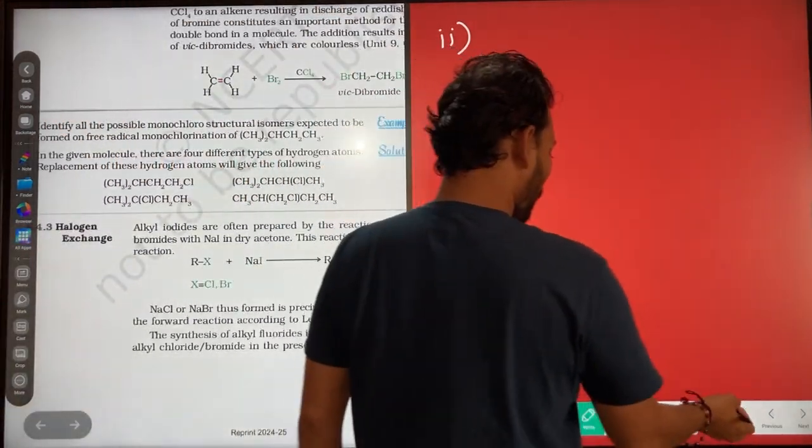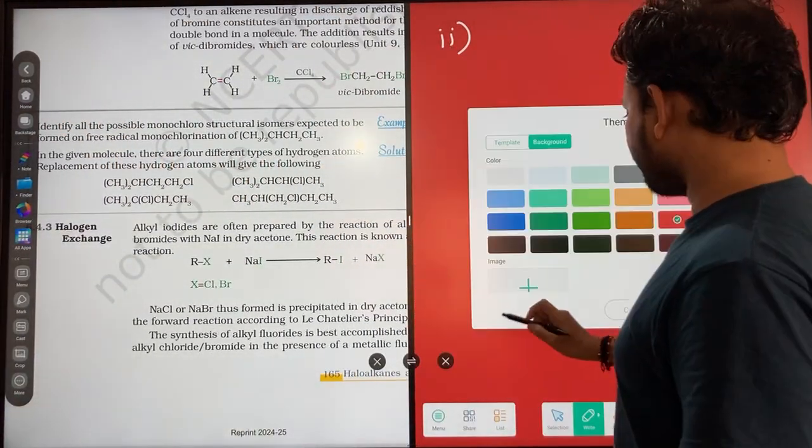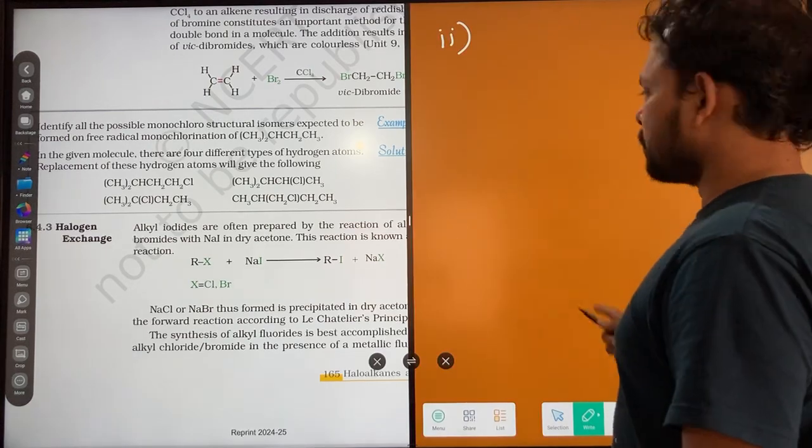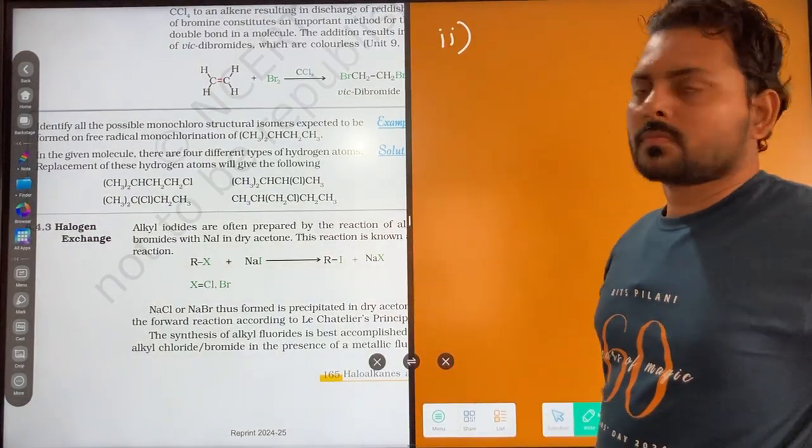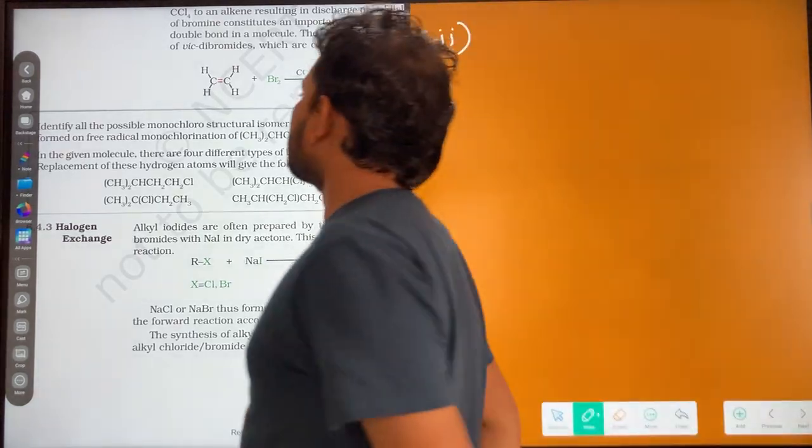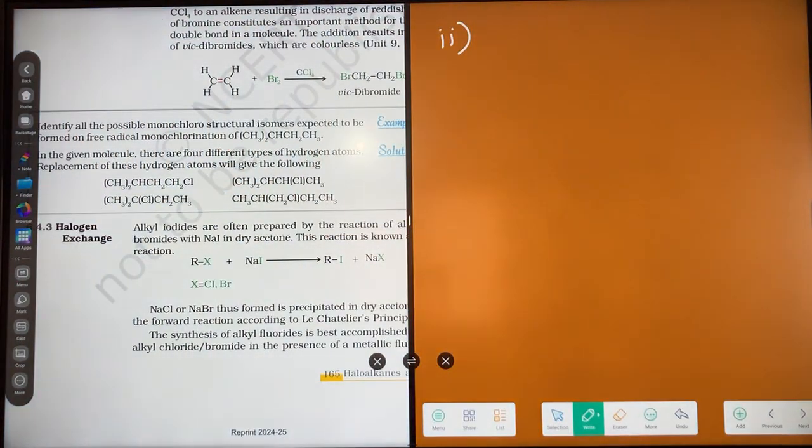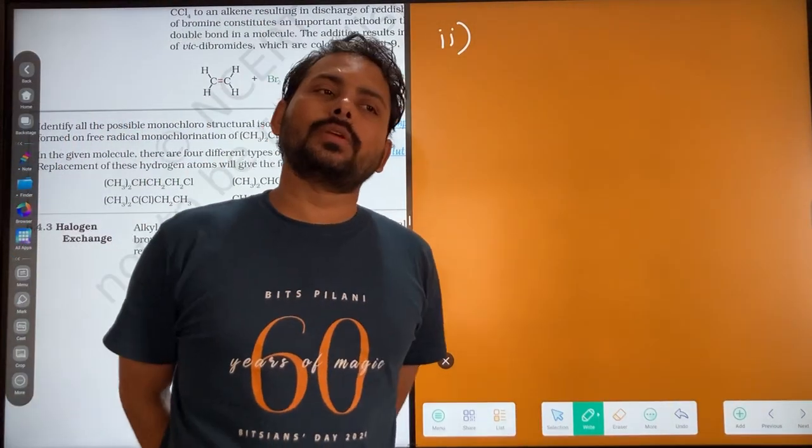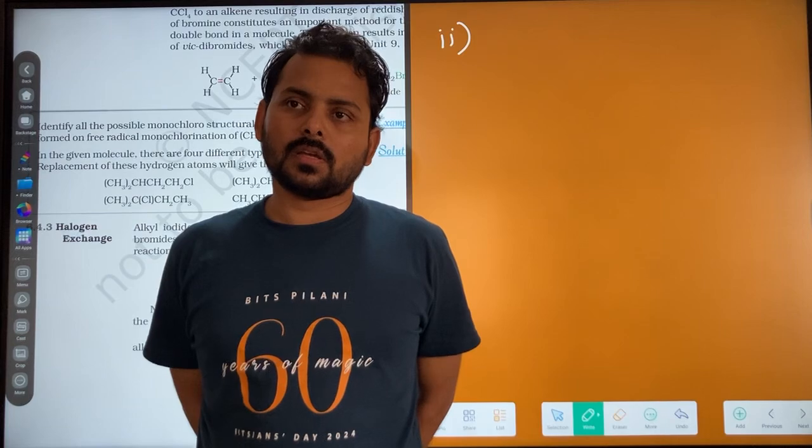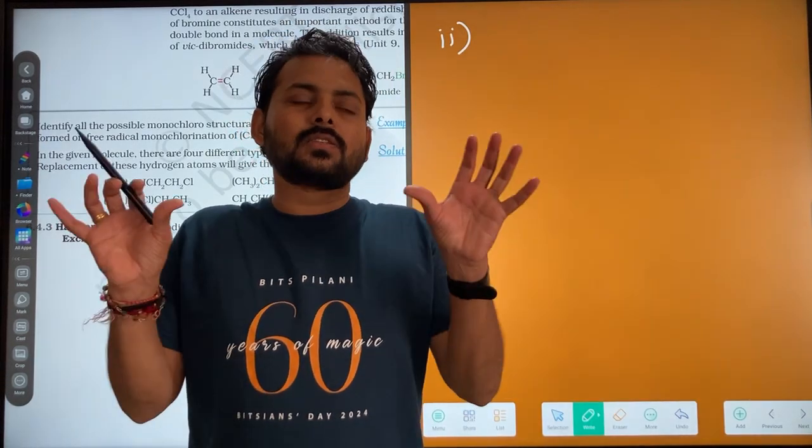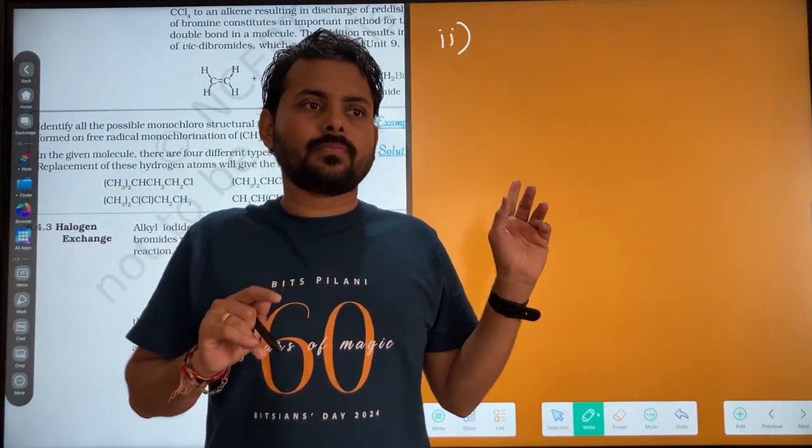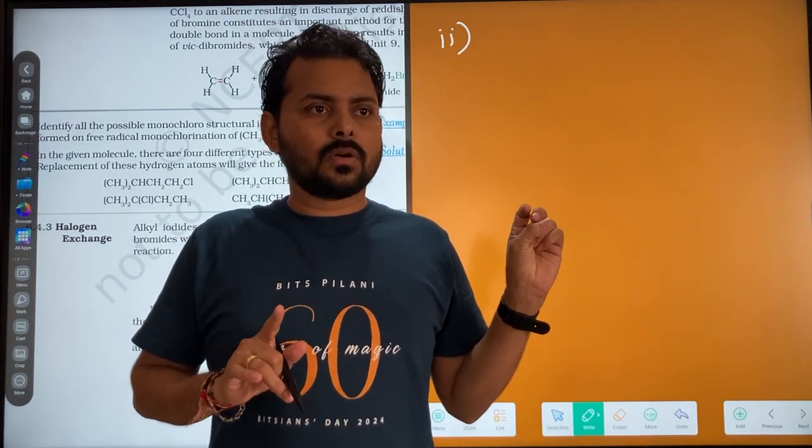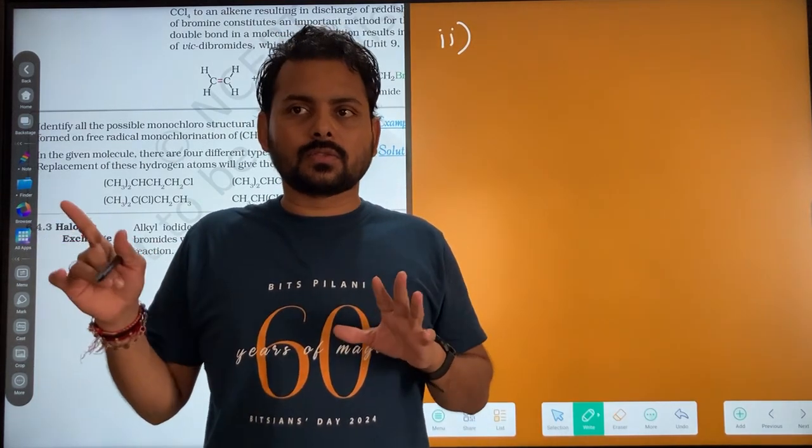Identify all possible monochloro-structural isomers expected to be formed on free radical monochlorination of this. क्या करना है? Hydrogen निकालना है और chlorine डालना है सब में। वहीं चीज़ करने है लेकिन isomers कहां से बनेंगे? जैसे जैसे तुम निकालोगे।